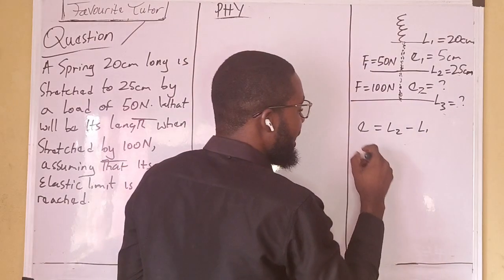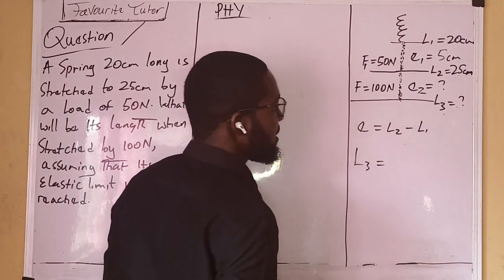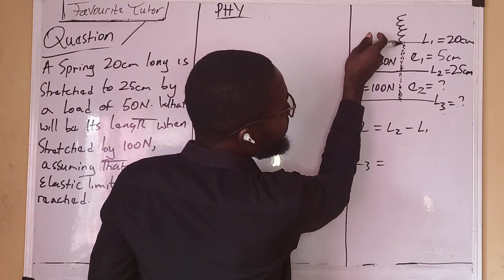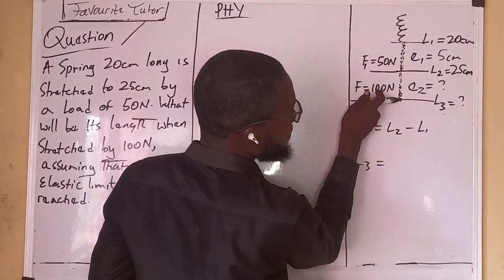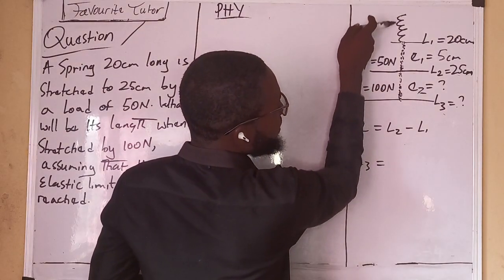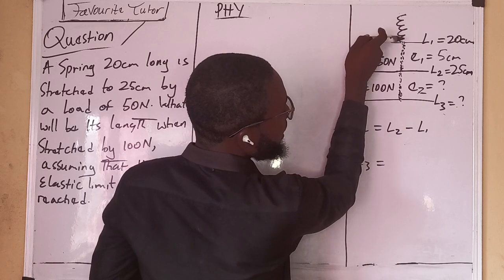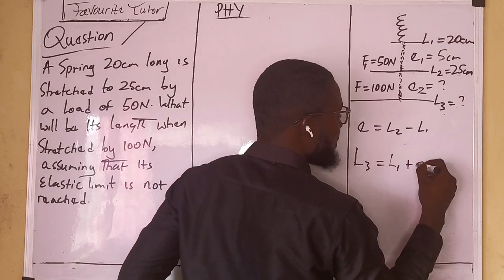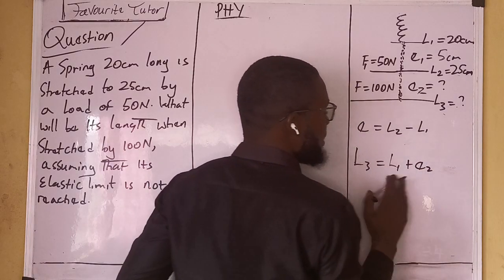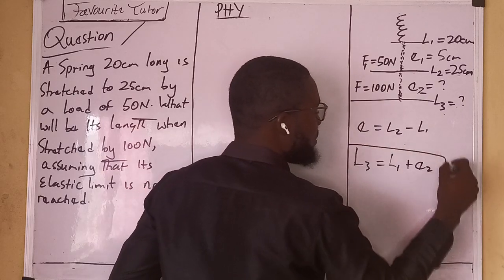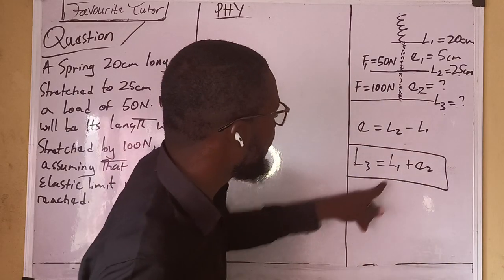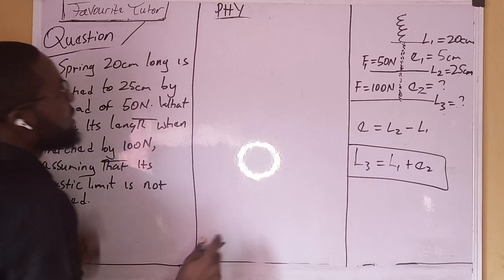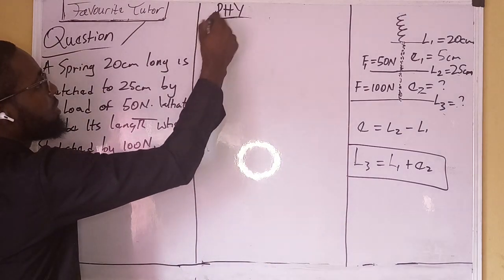We are looking for length three, the new length. To get length three, it is going to be length one plus extension two. So length one plus extension two gives us length three. We already have length one; we are looking for extension two.